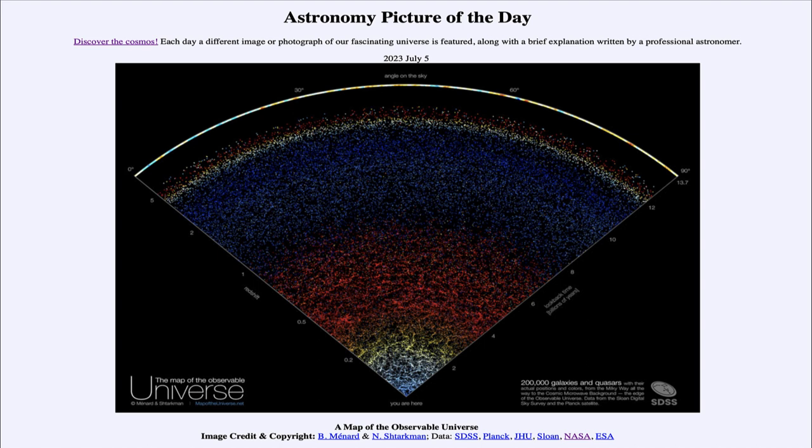So from the inner region where it says you are here out to about a redshift value of one, which corresponds to about seven billion years of look back time. Those are all galaxies.